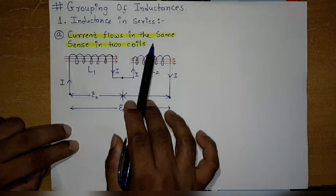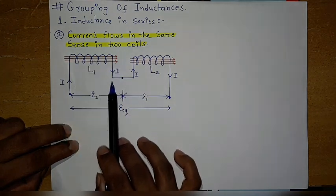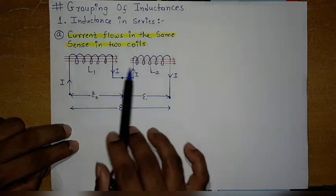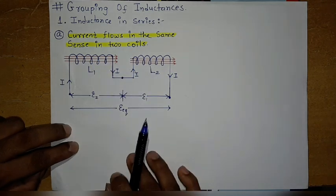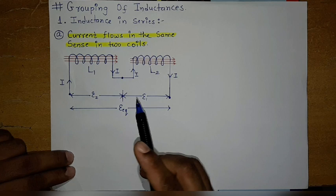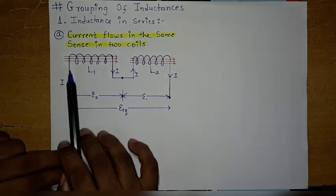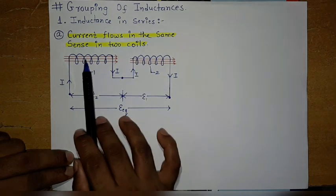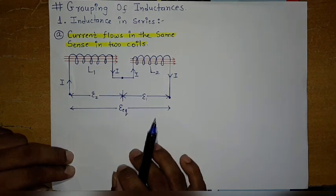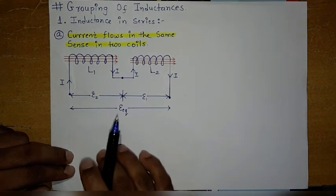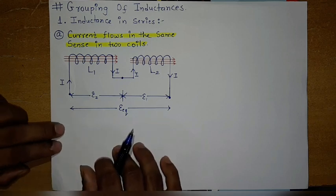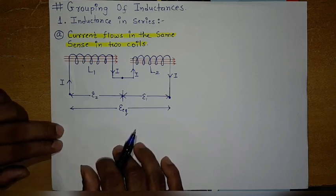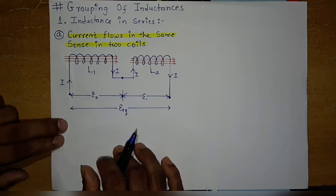In this series combination, the current flows in the same sense in both coils, meaning both currents in the coils are in the same sense. You can also say that the magnetic field lines produced by the two coils are in the same direction. So in a series combination, the induced EMFs in the two coils are added up.